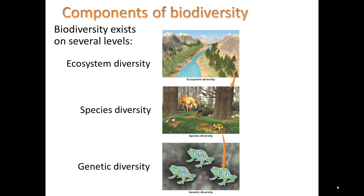Components of biodiversity can occur at several different levels. We can have ecosystem diversity, where we have many different types of ecosystems — wetlands, forests, mountainous regions. Within one of those ecosystems, we can have species diversity, which is usually what we think of when we say biodiversity — a large number of different species. Within any one given species, we can have genetic diversity: differences in the genes within that one species, so that not all frogs are identical twins.